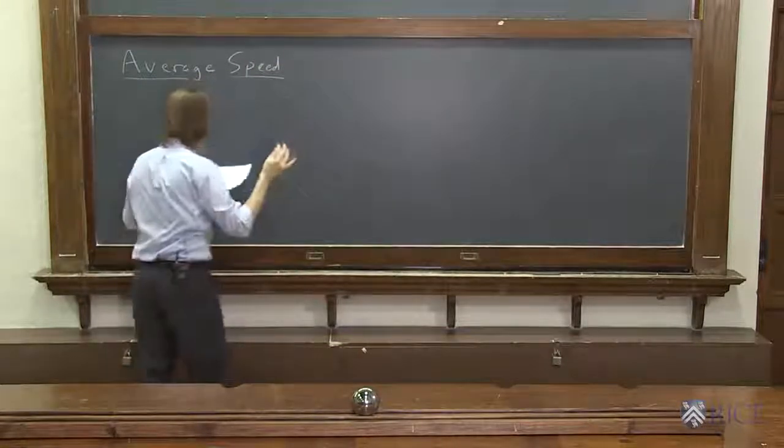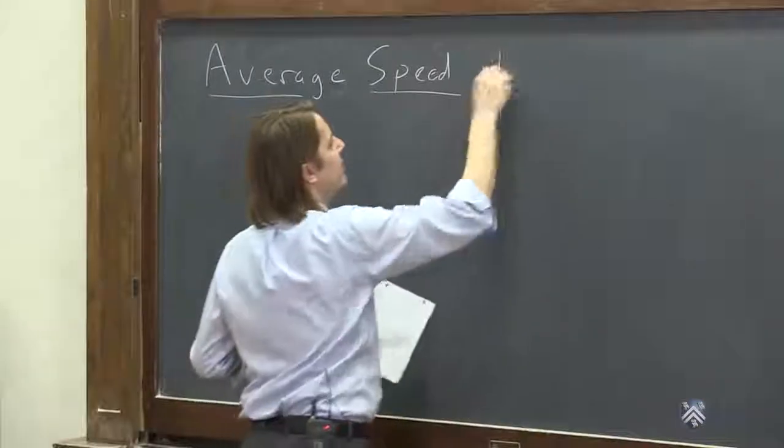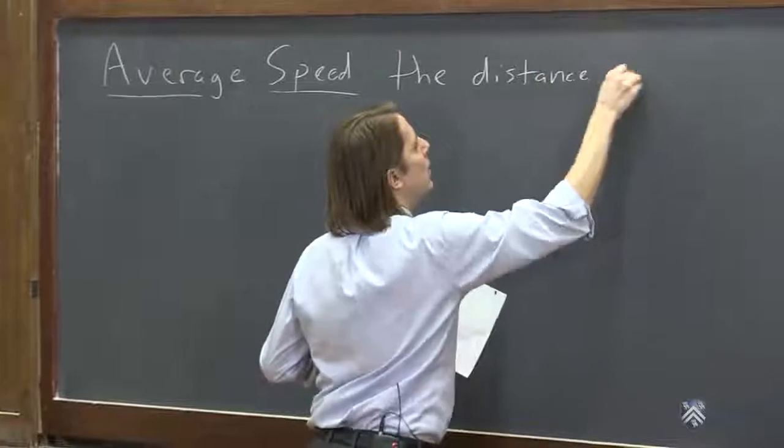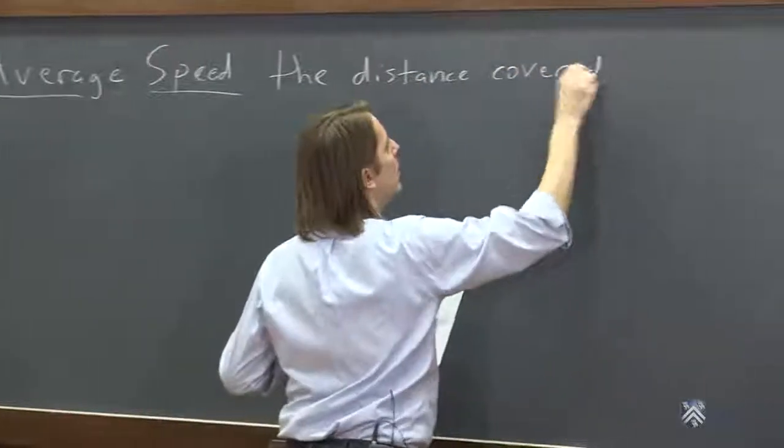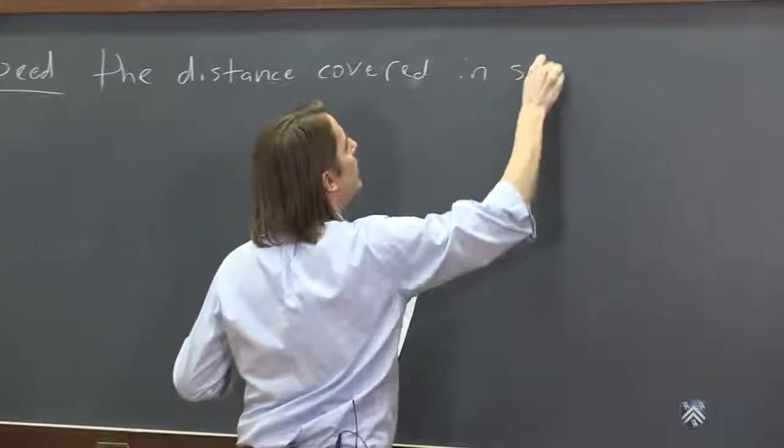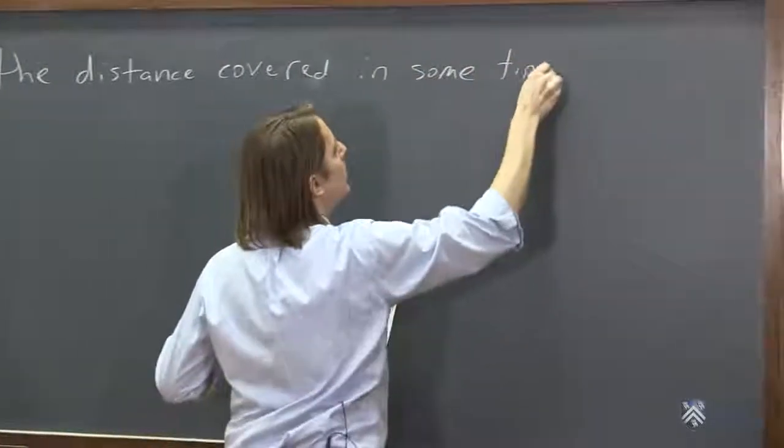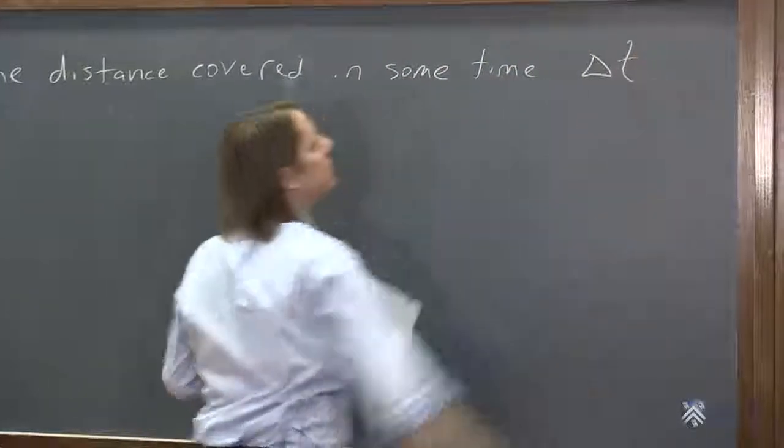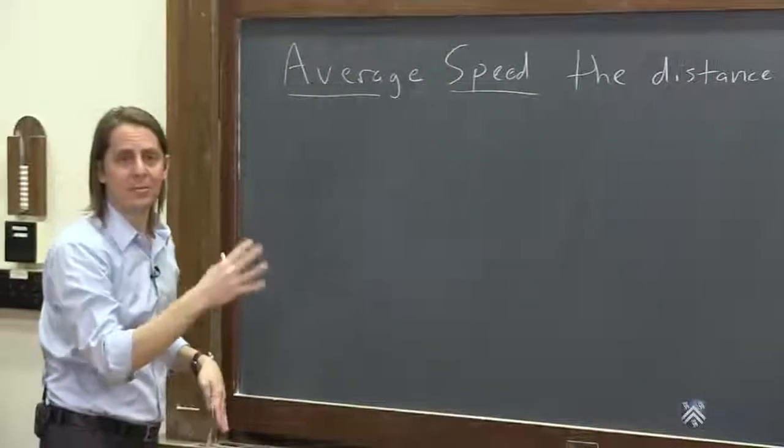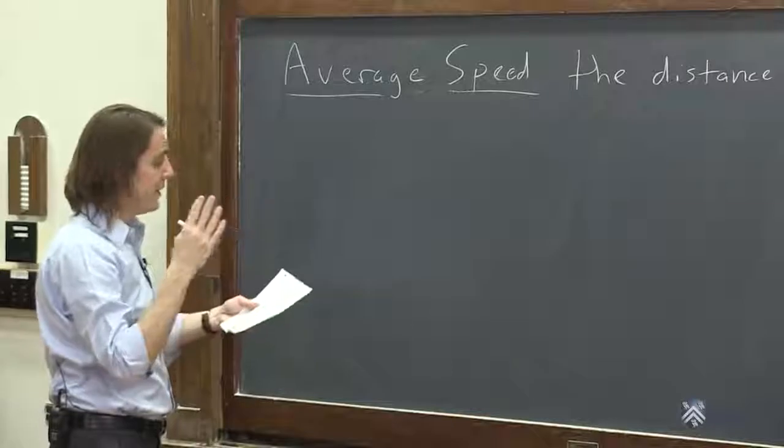Average speed is really just the distance covered in some time interval delta t. So like average velocity, it depends on an interval. But it's not velocity, it's speed.